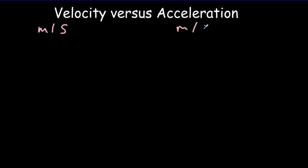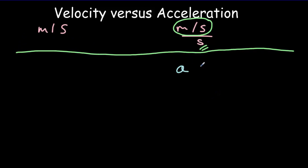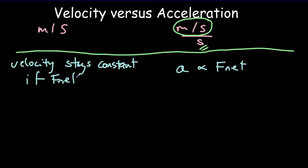One of the biggest conceptual problems students have is not clearly distinguishing between velocity and acceleration. First, units: the units for velocity are meters per second, whereas the units for acceleration are meters per second every second — it's how fast the speed changes per unit time. Second, acceleration is always proportional in size to the net force, so when you think acceleration, think net force. Whereas velocity stays constant if the net force is zero — we don't even need a net force to have a velocity.